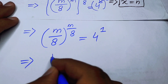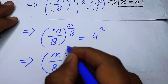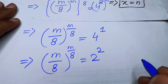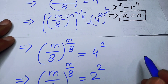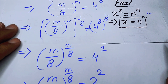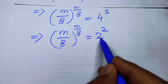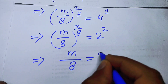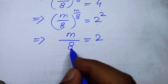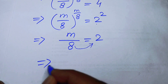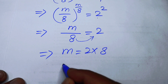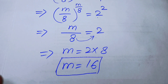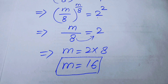We rewrite 4 as 2^2, so the right-hand side is 2^2. Now both sides have matching base and exponent, so by our fact, m/8 = 2. Multiplying both sides by 8 gives m = 16, which is our final answer. Thank you for watching — please subscribe for more exciting videos.